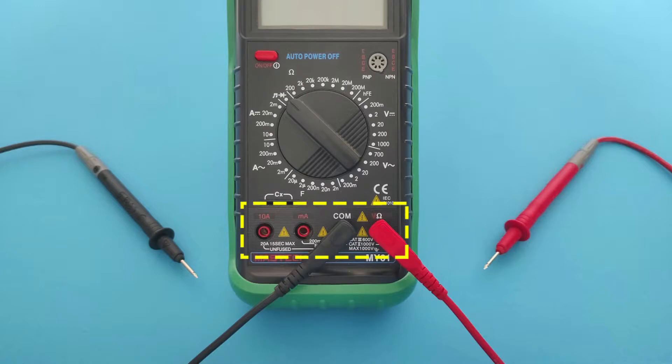Port milliamperes: this input is used to measure the current in milliamperes. Port 10A: this port is used to measure current in amperes. The number indicates the maximum current. Here it is 10 amps.